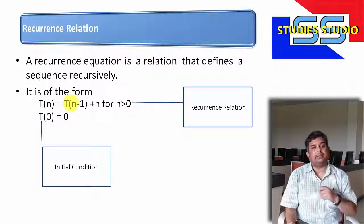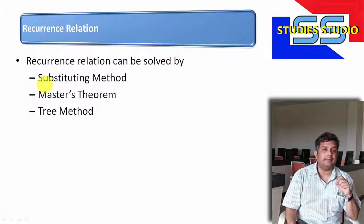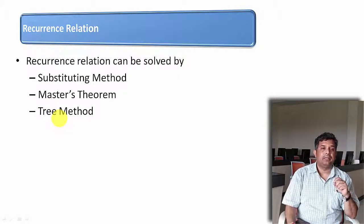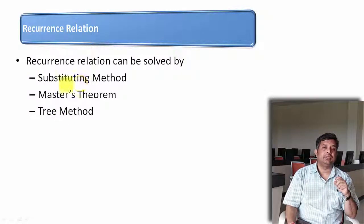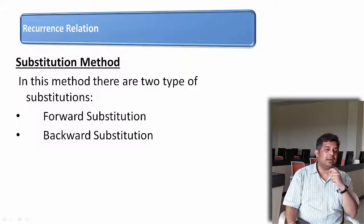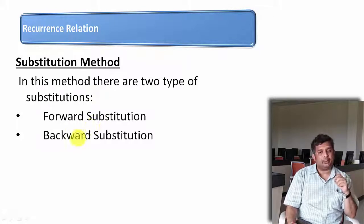In order to find the time complexity of a recursive function, we basically have three methods. The first one is the substitution method, the second one is the master's theorem, and the third one is the tree method. In this video, we are going to concentrate only on the substitution method. To find time complexity using the substitution method, we can use either forward substitution or backward substitution. We will see both of these using some examples.